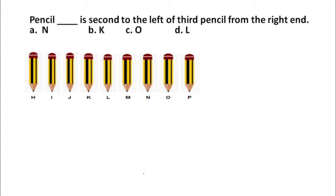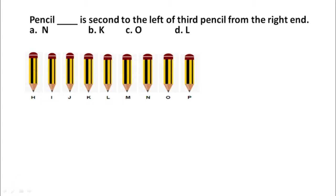Option A: N, option B: K, option C: O, and option D: L. Let us first count how many pencils are given — one, two, three, four, five, six, seven, eight, nine — nine pencils are given here. Each pencil is given a name: H, I, J, K, L, M, N, O, and P. We have to find out which is second to the left of the third pencil from the right end.